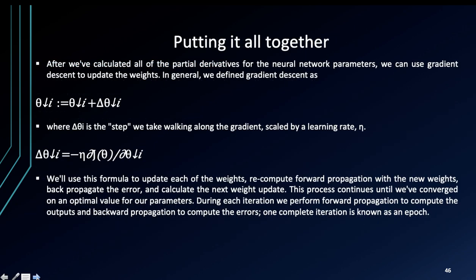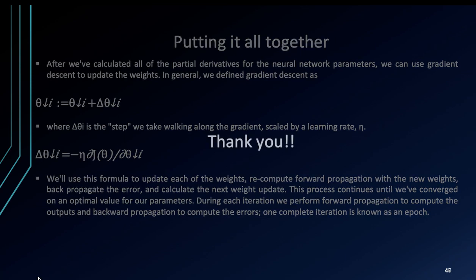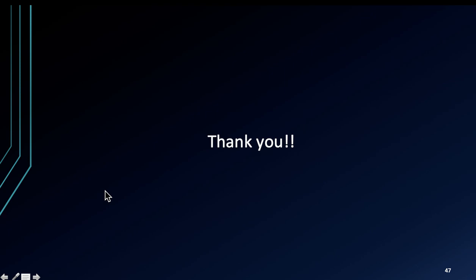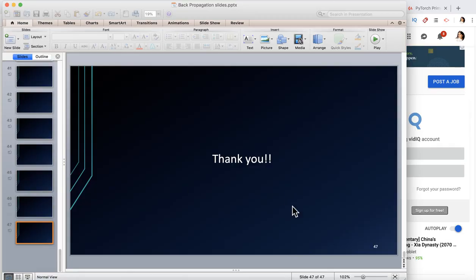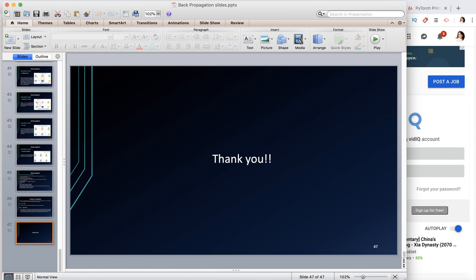After we have calculated all the partial derivatives of the neural networks, we can use gradient descent to update the weights. Basically, this is all what you need to know about backpropagation. This is not something you have to implement mathematically, at least when you work with practical data science and when you work with common Python or even R deep learning data science packages.